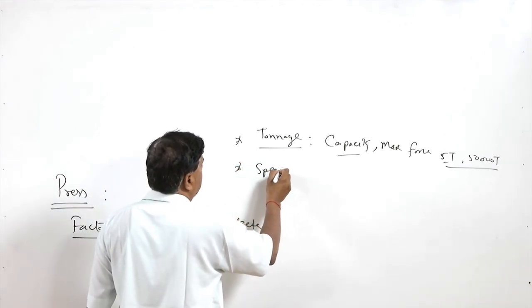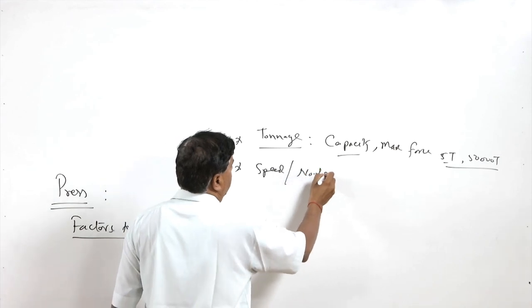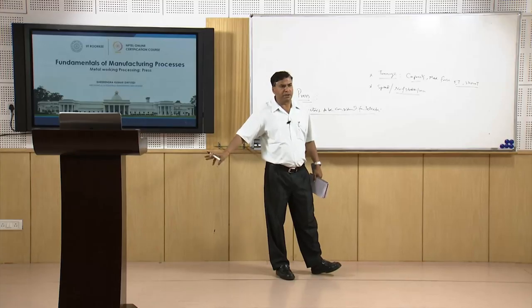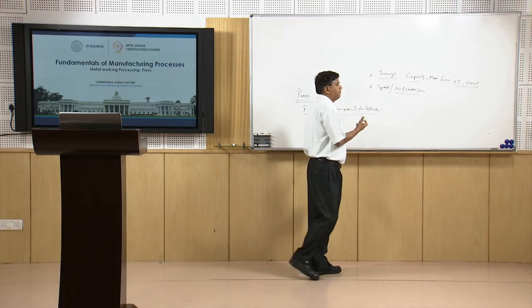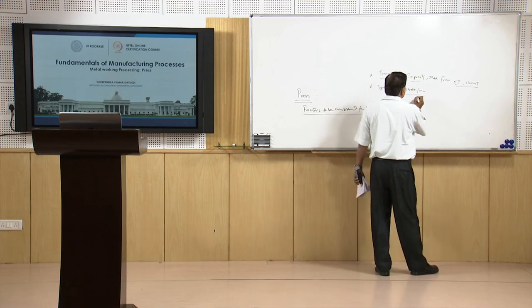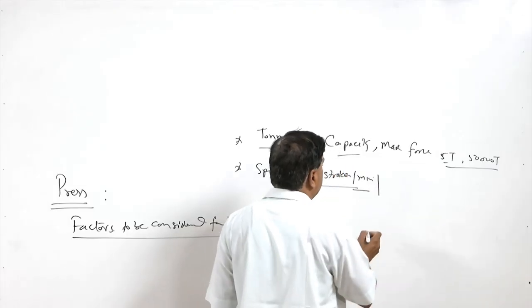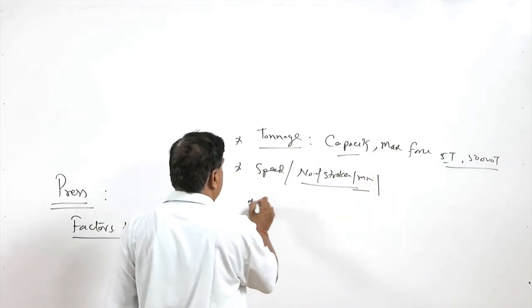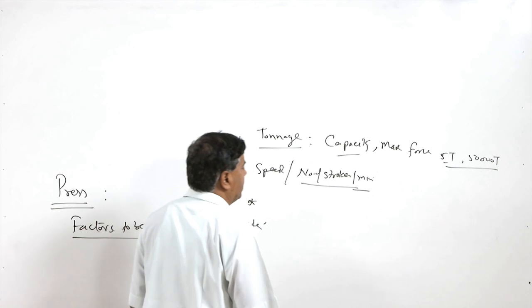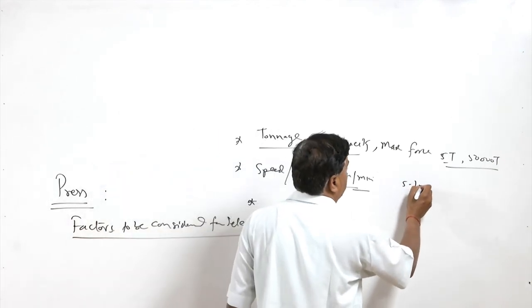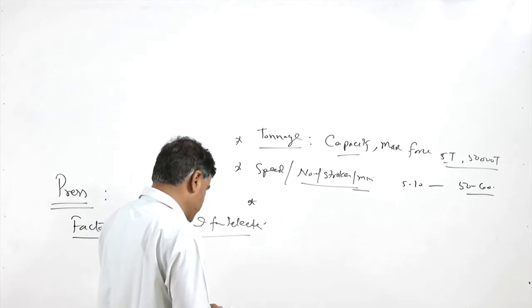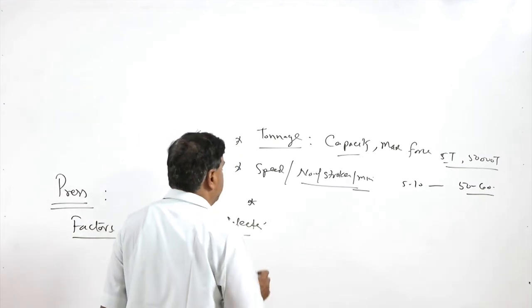Another factor is speed, also termed as number of strokes per minute. For certain operations like deep drawing, we need slower RAM movement, while in some other processes we need faster movement. The number of strokes per minute is another factor depending upon the speed at which RAM movement is needed — this may be 5–10 or 50–60 or even more — and a suitable press is selected accordingly.